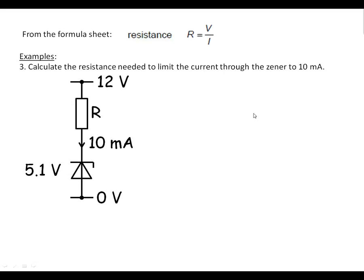The third example uses a Zener diode. Again, we're going to look at how much resistance is needed to limit the current to 10 milliamps. It's a 5.1 volt Zener. So we know how many volts we've got across the resistor. 12 volts across the top, 5.1 volts at the bottom. So we've got 6.9 volts across it.